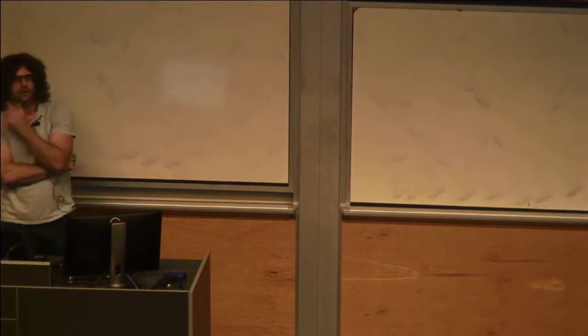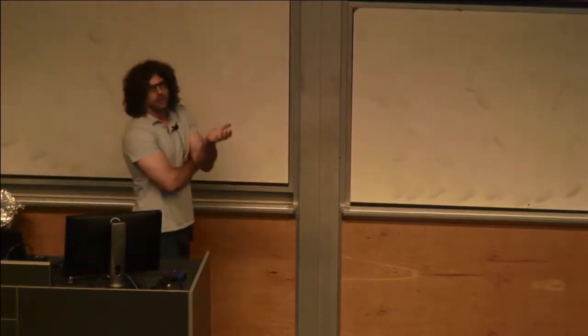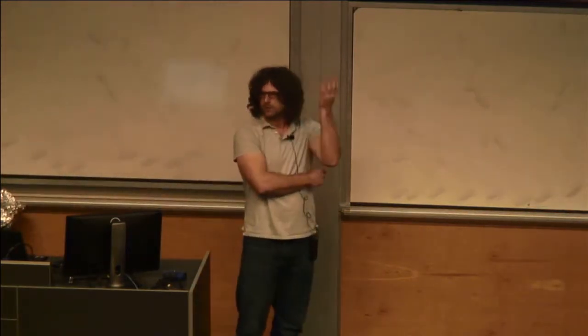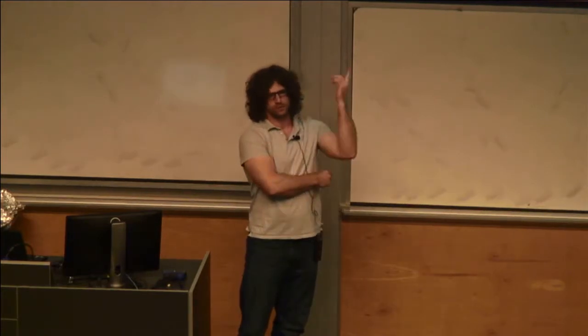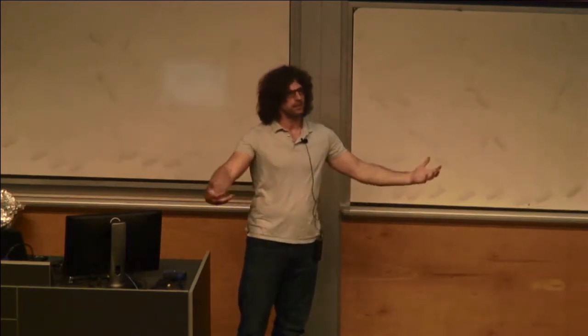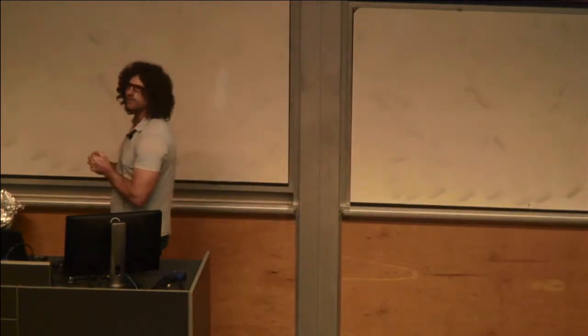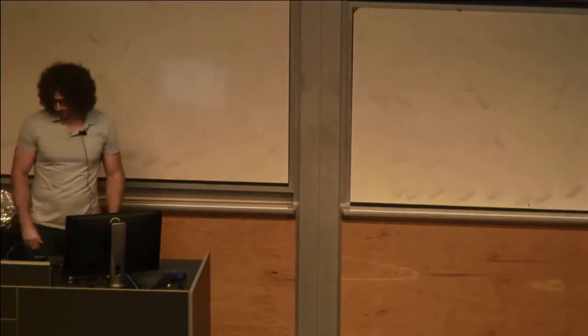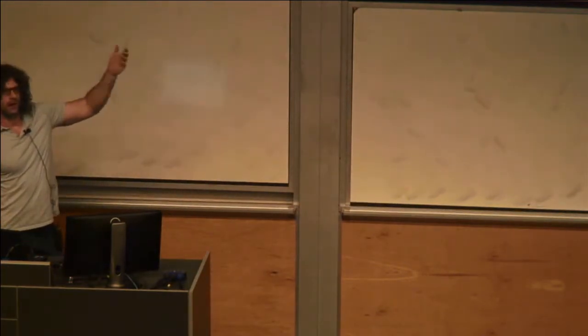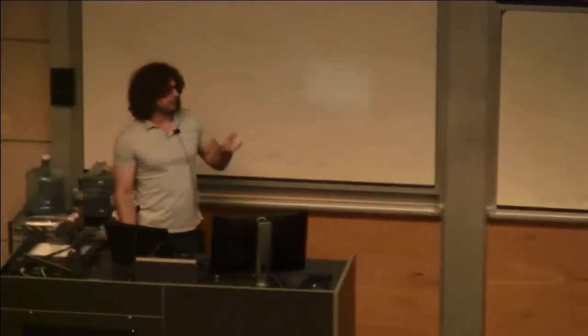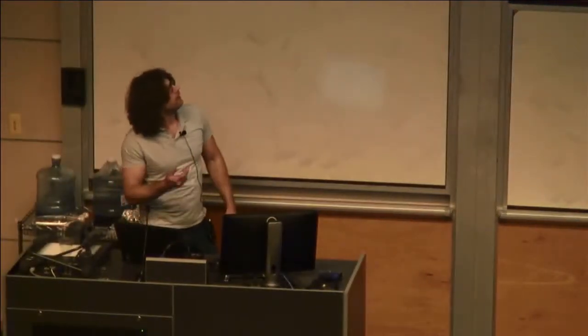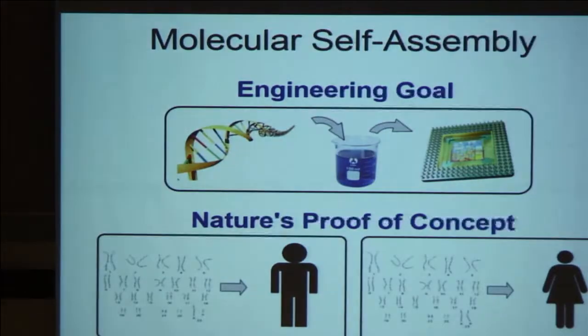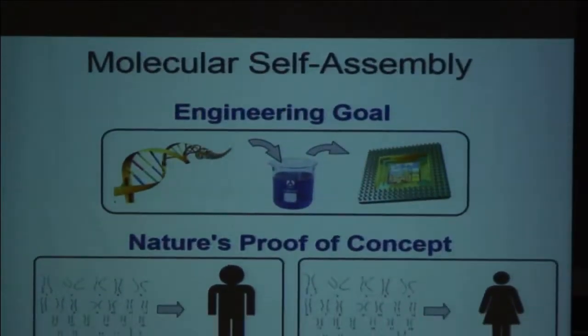We're going to focus on an abstract mathematical model of self-assembly where the parts, the monomers in the system are simple square tiles with different colored glues on the sides. The idea is they float about in the plane and bump, and when they match glues, there's an affinity for them to stick together, and that's what drives the self-assembly process. Now this is motivated, first of all, by DNA.